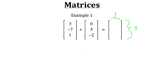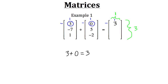Now, how do we add the matrices together? We take an element from a certain position in the first matrix and add it to the element in the second matrix that's in that same exact position. For example, in matrix one, the element in row one, column one is three. We add it to the element in the second matrix also in row one, column one, which is zero. The resulting sum goes into row one, column one for the resulting matrix. So three plus zero gives us a result of three.